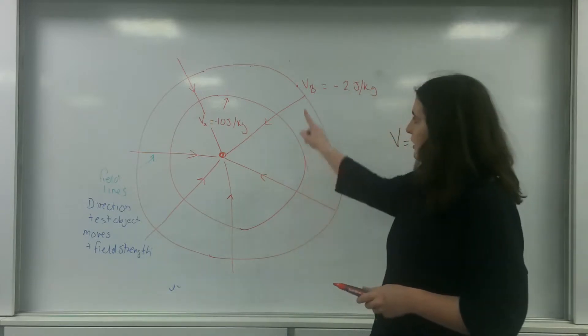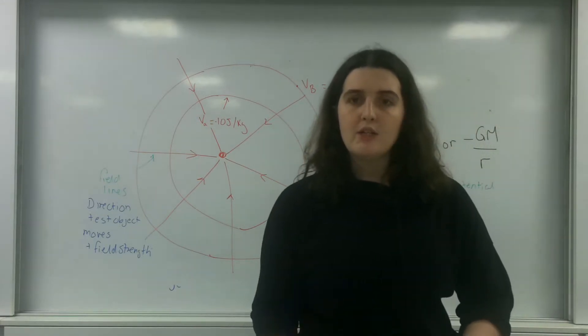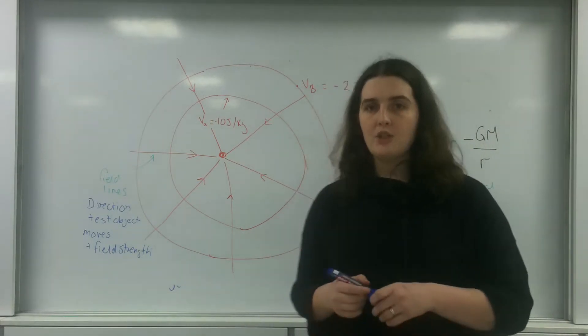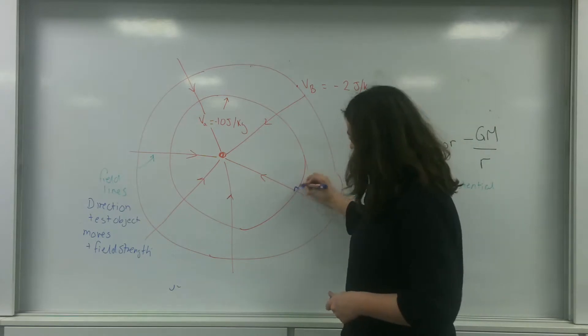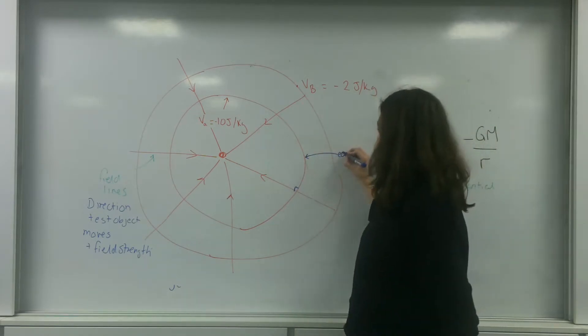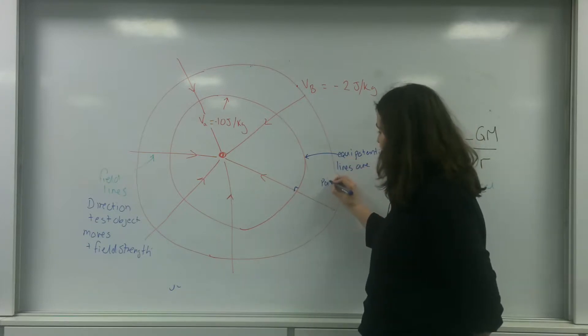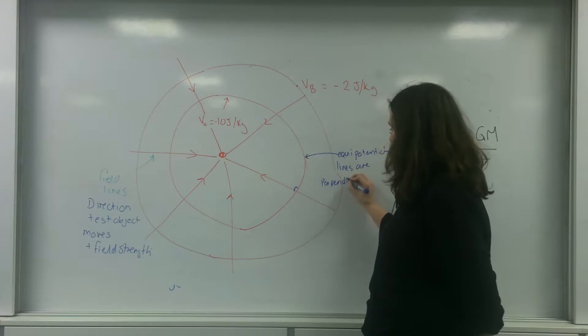Now these lines here that I've drawn around, these are equipotential lines. These are regions where you have the same potential. And as you can see, they're at right angles to the field lines. So these equipotential lines are perpendicular to your field lines.